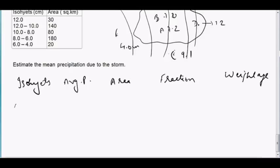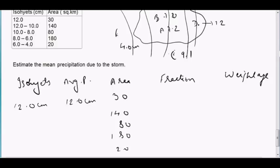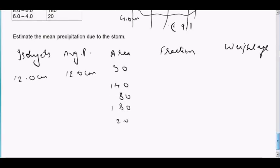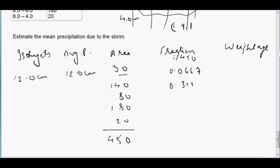The first isohyte is 12.0 cm with average P of 12 cm and area of 30 sq km. The areas noted are: 30, 140, 80, 180, 20, giving a total sum of 450 sq km. The fraction of area is each area divided by 450. So 30 divided by 450 gives 0.0667. For the next one, you get 0.311.